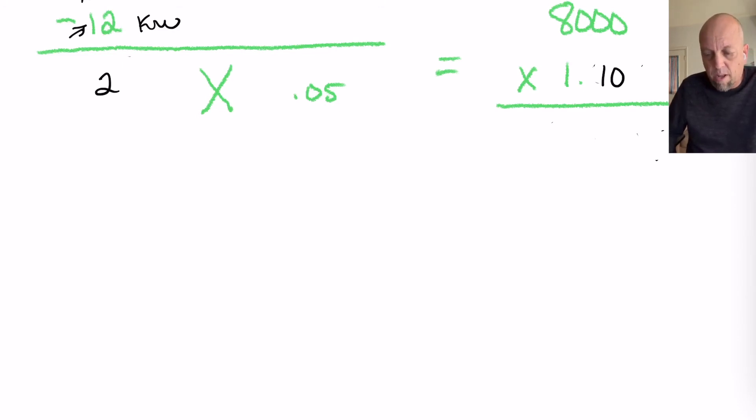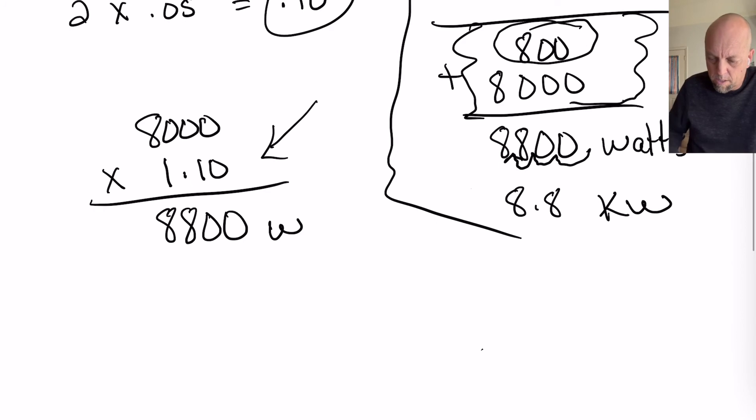So, you multiply that times 0.05 and put it right here in this formula. So, we've got the 8,000 watts, which was in column C for one range. Multiply it times 1.10 comes up to 8,800 watts.